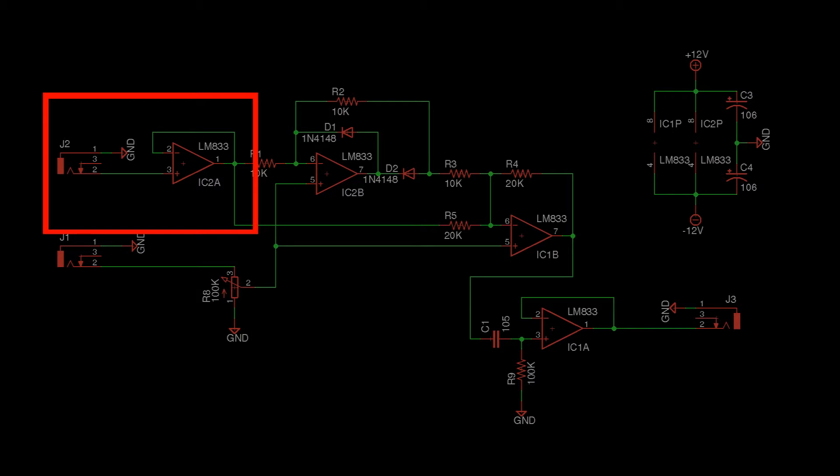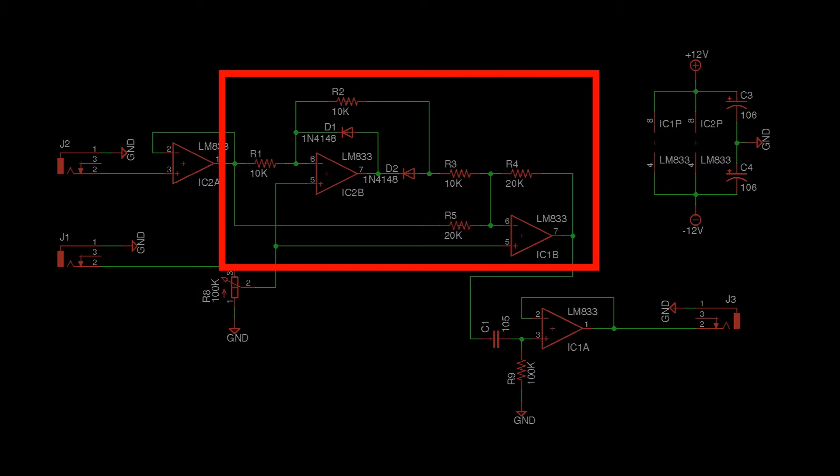The signal to be filtered comes in here and passes through a unity gain follower to remove any effects of input impedance. The main part of the circuit is a precision rectifier. It folds over the input signal at the voltage specified by the CV input. If the CV is zero, the bottom half of the signal will be folded into the top half.